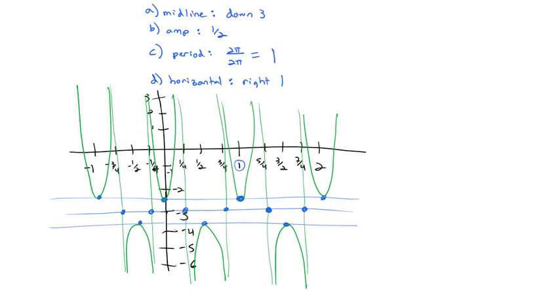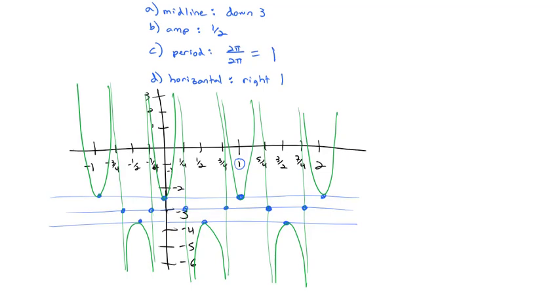For secant and cosecant graphs, all we have to do is draw the reciprocal graph first, use the midline to place the asymptotes, and then draw our U-shapes and upside-down U-shapes within the asymptotes. Now let's talk about tangent and cotangent.